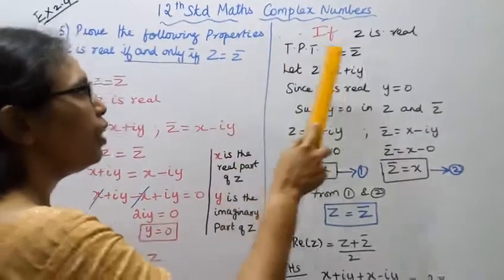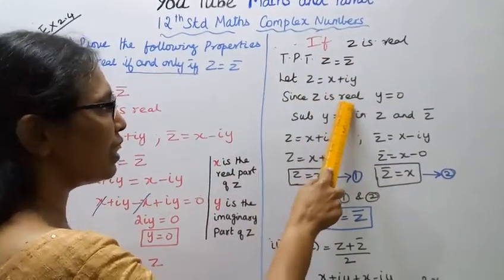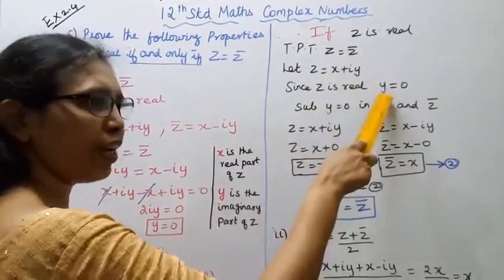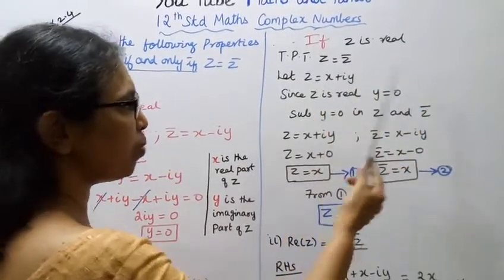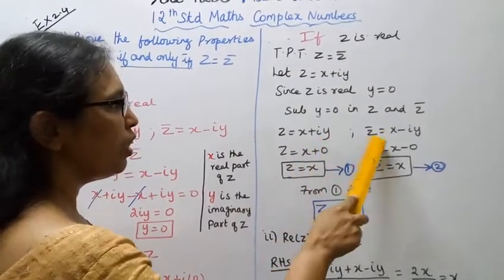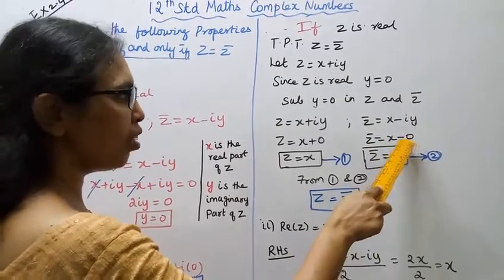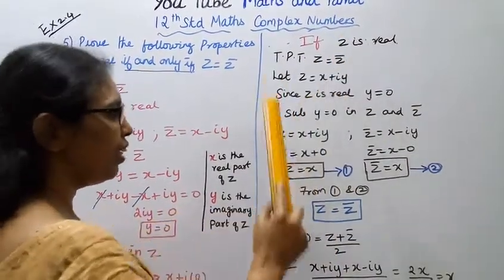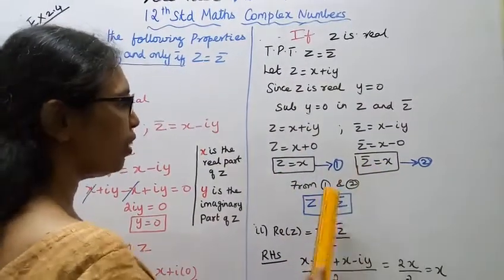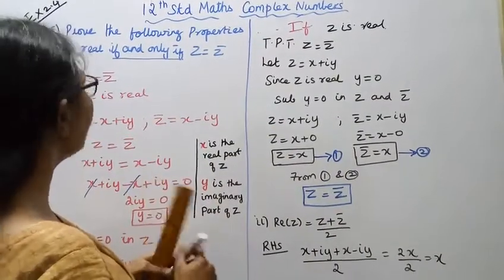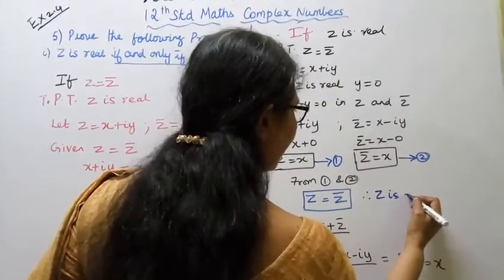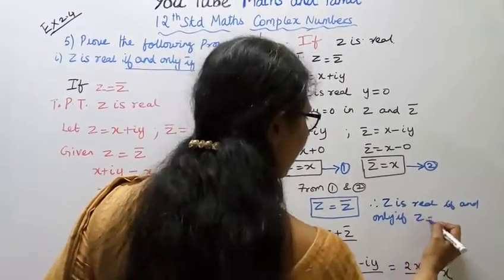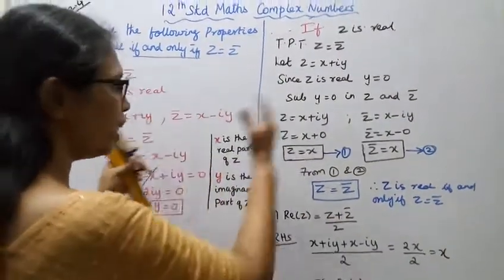Now for the converse: to prove that if z is real, then z equals z̄. Let z equal x plus iy. Since z is real, y equals 0. Substituting y equals 0 into z and z̄ shows z equals z̄. Therefore z is real if and only if z equals z̄.